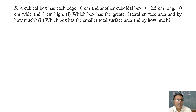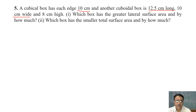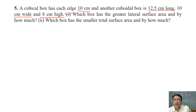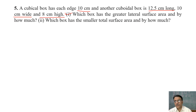Question five: a cubical box has edge 10 cm and a cuboidal box is 12.5 cm long, 10 cm wide, and 8 cm high. First part: which box has the greater lateral surface area, and by how much?